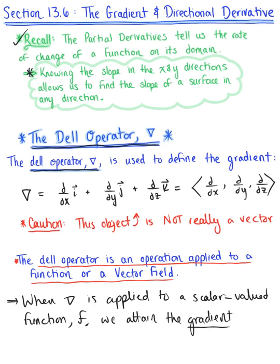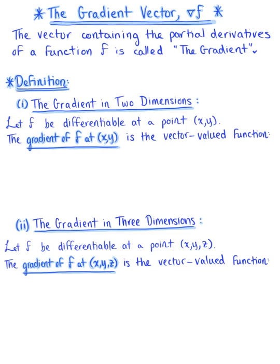The gradient is thus defined as del f. Now that we have defined the del operator and emphasized that del is a vector operation applied to a function or a vector field, we can look at the formal definition for the gradient. So here we go — the gradient vector del f.